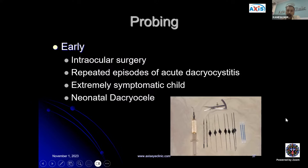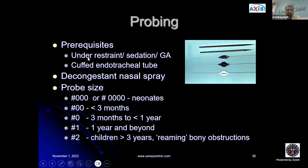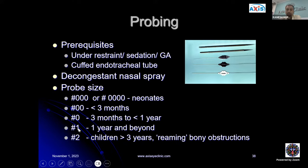Probing is ideally done under GA using a cuffed endotracheal tube, though some do it under restraint or sedation. A decongestant nasal spray is used. Probe sizes vary: size zero for 3 months to under 1 year; 00 for under 3 months; 000 or 0000 for neonates; size 1 for children over 1 year; size 2 for older children or when reaming bony obstruction is needed.